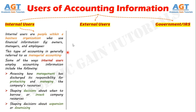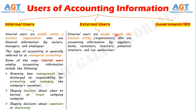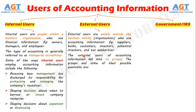External users of accounting information are people outside the business entity or organization who use accounting information. Examples of external users are suppliers, banks, customers, investors, potential investors, and tax authorities. This is typically called financial accounting, and the record of a business's financial history for use by external entities is used for many purposes.